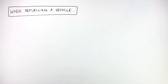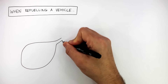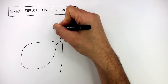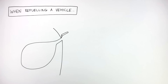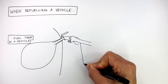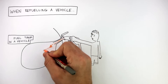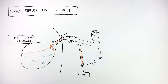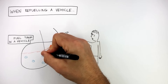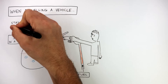When refueling a vehicle there's the risk an explosion can happen because of a buildup of static electricity. Here is the fuel tank and the outside of the vehicle — in this example it's a car — and here is the person who is refueling the vehicle. Static charge can build up as the fuel flows, due to friction as the fuel rubs against the walls of the tube and the fuel tank.